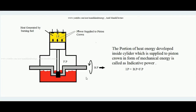It is a diagram of a four-stroke SI engine. You can see that there is a cylinder, there is a piston, there is a connecting rod, this is the crankshaft, and this is the crankcase. This is an indicative diagram of one four-stroke SI engine.